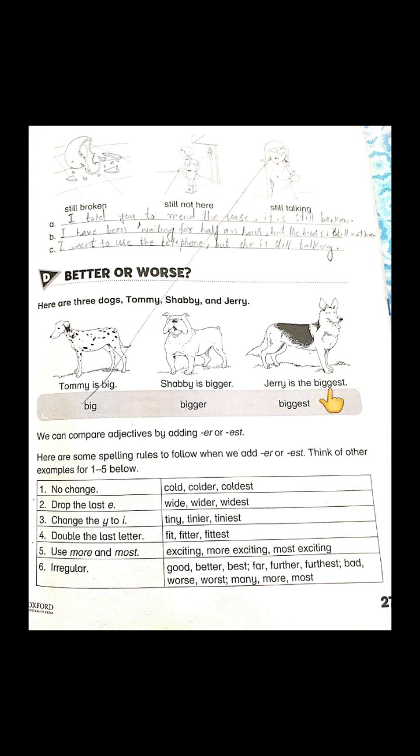Comparative adjectives are for comparison between two nouns, and superlative adjectives are for comparison between three or more nouns, or one thing against the rest of the group. While forming comparative and superlative adjectives, there are some rules to follow. For adjectives that are just one syllable, we add -ER at the end. For example, 'big' is one syllable, so the comparative becomes 'bigger' — with a slight spelling change, double G-E-R.